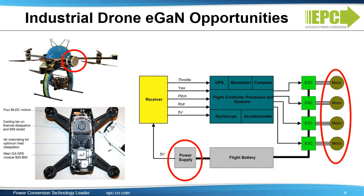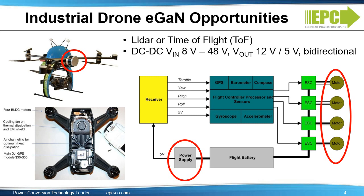EGAN devices address multiple applications within every drone. First, the LiDAR or time-of-flight sensors that act as the eyes of the drone — EGAN devices are the leading technology for time-of-flight and LiDAR. Second, the DC-to-DC power supply that converts from battery voltage to the typical 12 volts used as input for other blocks. Industrial drones use a series of 12-volt battery packs, generally four, resulting in a typical input voltage of 48 volts. The DC-to-DC converter is typically a buck regulator, and often needs to be bi-directional to recharge the batteries. Finally, the motor drive — each arm of the drone has a motor, and the motor drives need to be very small to be integrated within the motor in the arm. Industrial drones have, on average, six motors per drone.